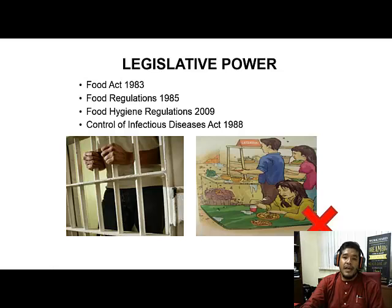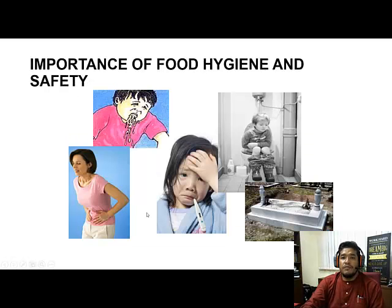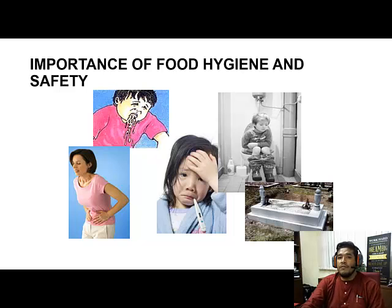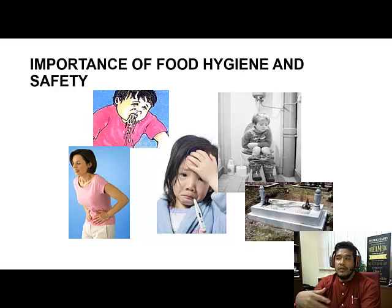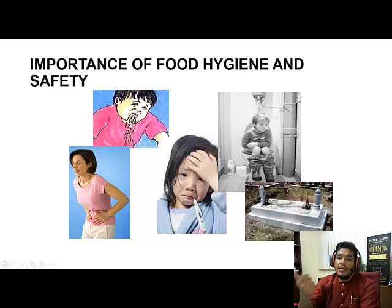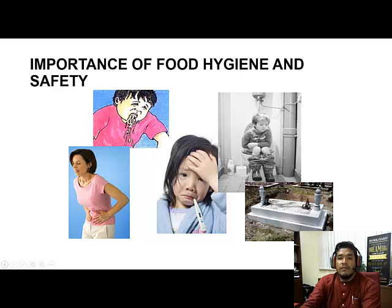Today we will talk about the importance of food hygiene and safety, because the reason why we want to give this exposure is to avoid food poisoning from happening in our country. Food poisoning can differ from one person to another — the harm caused can be differentiated based on the type of bacteria that enters the body, the immune system of the victim, and how much bacteria goes into the body.